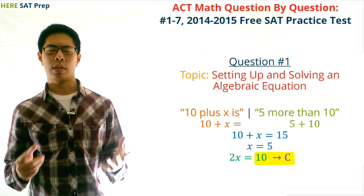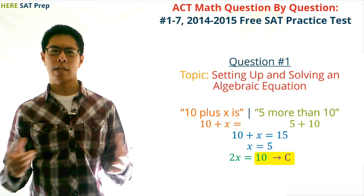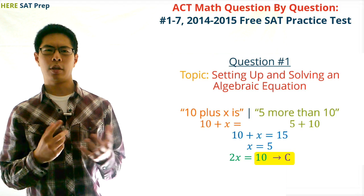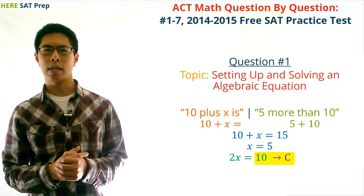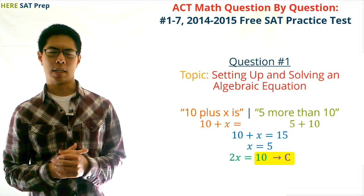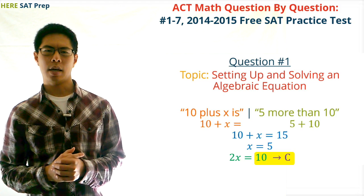To get 2x, we simply multiply both sides by 2, so we end up with 2x equals 10. So our answer is C, 10.